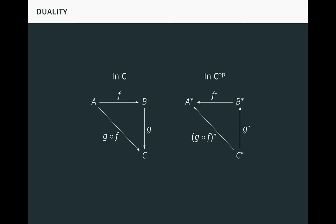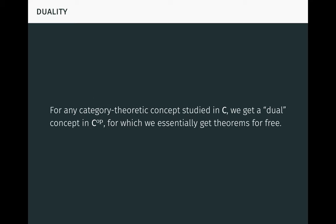At first glance, this seems a little silly, but it turns out to be extremely powerful. The reason is that for any category-theoretic concept studied in C, we get a dual concept in C^op, for which we essentially get theorems for free. These dual concepts turn out to be just as important as the original concepts. By reversing the arrows in C, we're able to double the bang for our buck, so to speak, and significantly expand the scope of our theory.